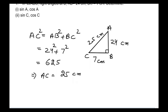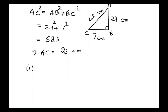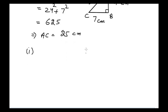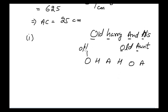Now we need to find sin A and cos A. To memorize the formulas for sin A, cos A, and tan A, there is a helpful sentence: 'Old Harry and his old aunt.' Focus on the first letters of every word — O, H, A, H, O, A — where O stands for opposite side, H for hypotenuse, and A for adjacent side.